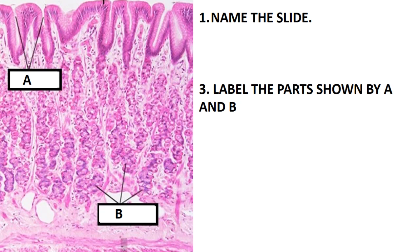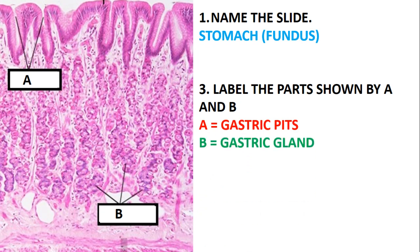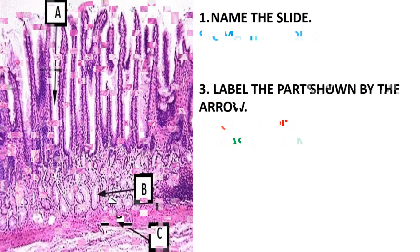Moving on, name this slide. This slide is still the stomach — A is just showing the gastric pit and B is just showing the gastric gland. So the answer is just the stomach, specifically the fundic part. Label the parts: A is the gastric pit and B is the gastric glands.